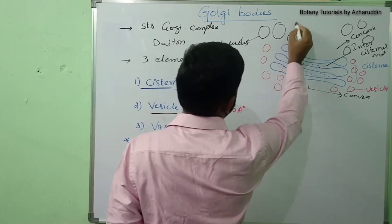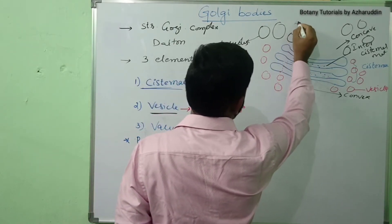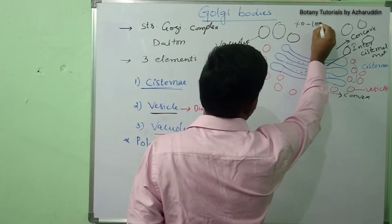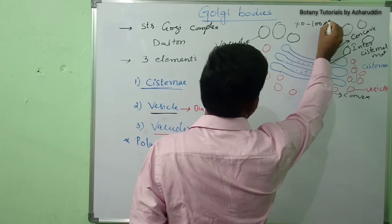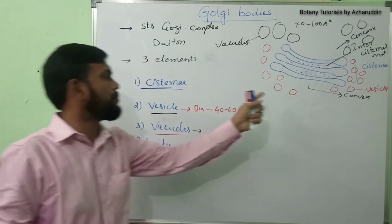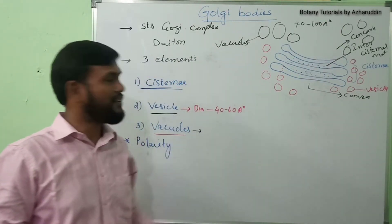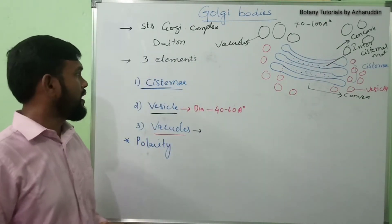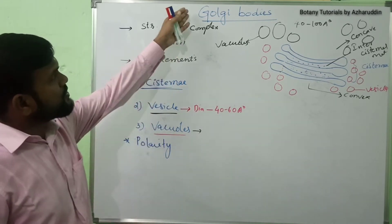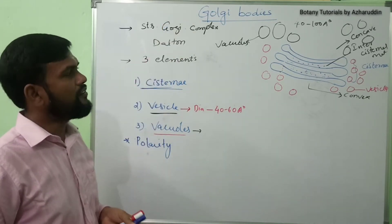The diameter of vacuoles is about 40 to 100 angstroms. They are larger in size compared to vesicles.